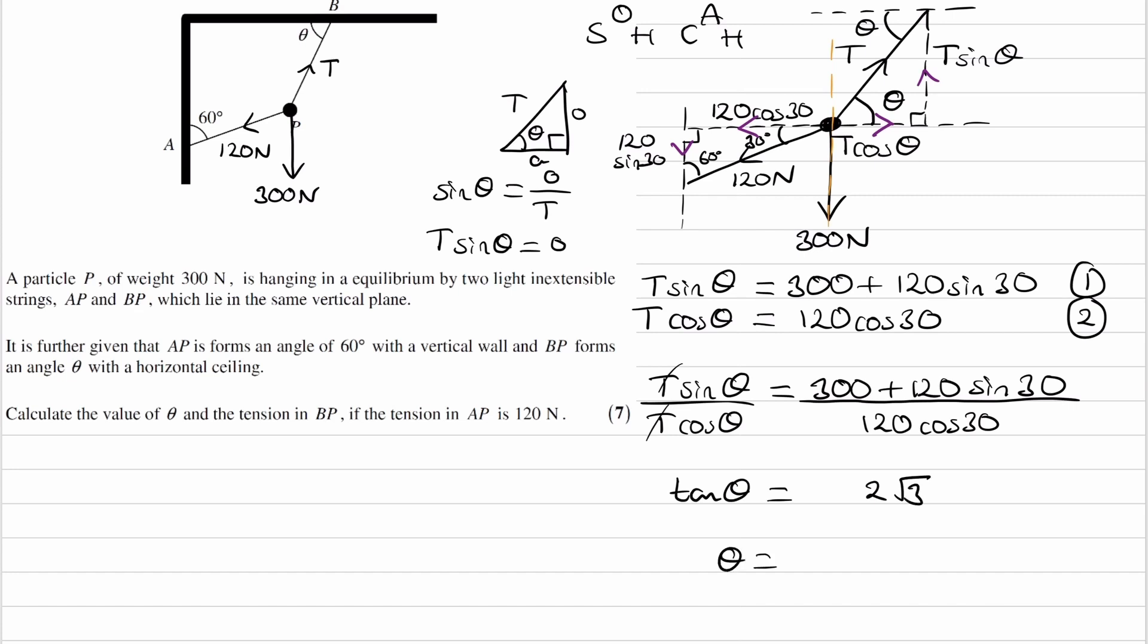So then theta would be inverse tan of 2 root 3, and this will give us an angle of 73.9 degrees to one decimal place.